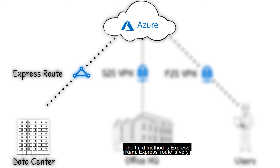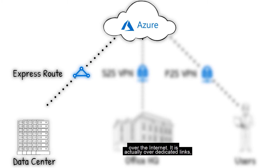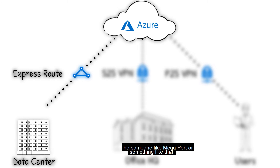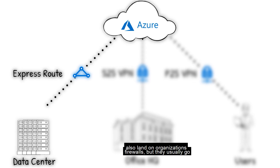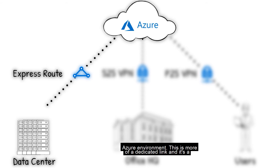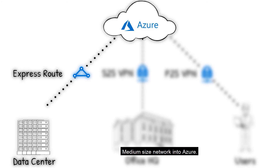The third method is ExpressRoute. ExpressRoute is very similar to VPN, but it's not over the internet. It is actually over dedicated links, and usually there's a backbone carrier — in Australia that might be someone like Megaport or something like that. ExpressRoute usually goes between a data center, though it can also land on an organization's firewalls. This is more of a dedicated link, and it's a good method for growing a medium-sized network into Azure.